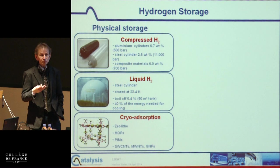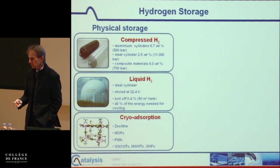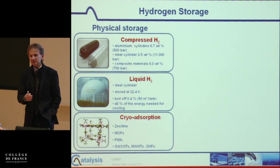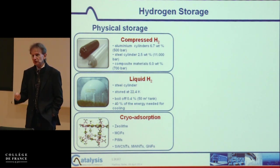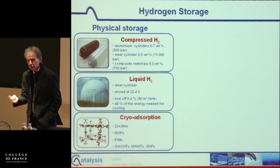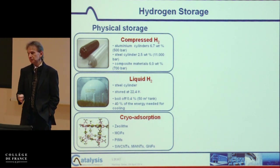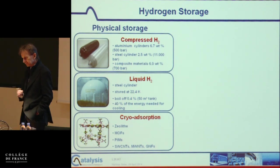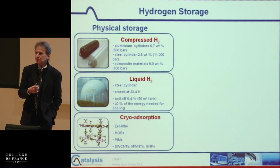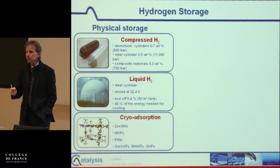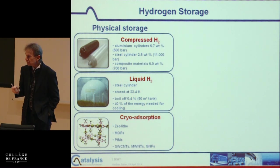Hydrogen is the most abundant molecule in the universe, but unfortunately it is not available on Earth because it's gaseous and diffuses off. We have to make it on Earth, and 96% of the hydrogen used today is made from fossil fuels — coal gasification, but especially oil refining — producing hydrogen and carbon dioxide at the same time. However, you can produce so-called green hydrogen, that is carbon dioxide-free hydrogen, by water electrolysis using renewable energy.